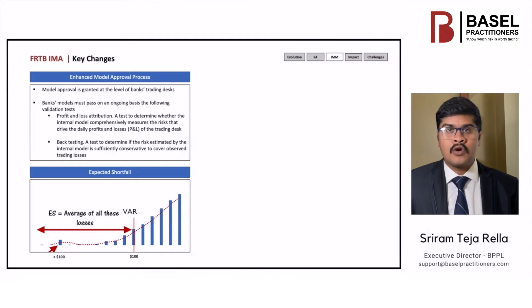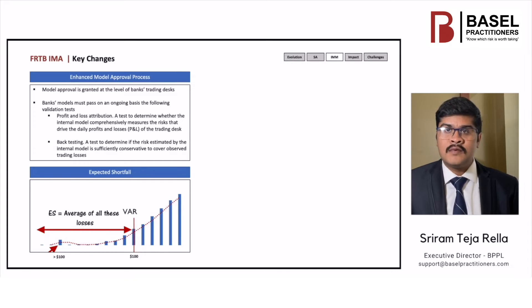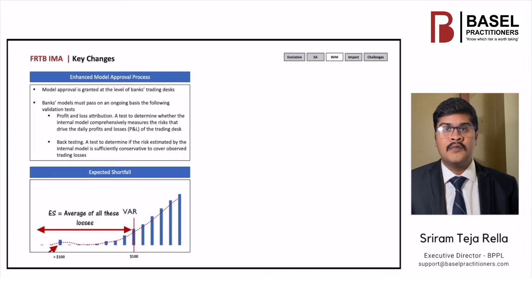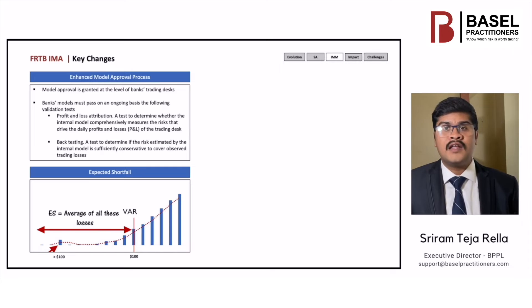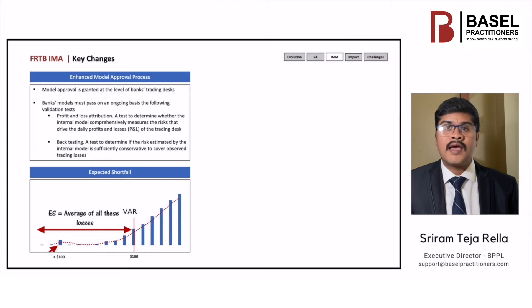In the expected shortfall graph, let us assume that the red line is at 97.5%. At this confidence level, VAR measures the maximum loss of 100 million. Another way of saying this is that only in 2.5% of cases does the loss exceed 100 million. However, ES calculates the average loss above this confidence level — in other words, above 100 million. So, for a given confidence level, ES is more than the combined VAR and stressed VAR.